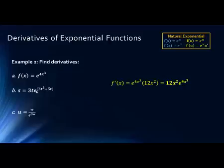Here we have another problem that actually involves a product rule. Notice we have the variable t. We have 3t times e raised to the power of 3t squared plus 5t. So we have a few things going on here: a constant, the power rule, and a natural exponential raised to a function — so we have a chain rule as well.